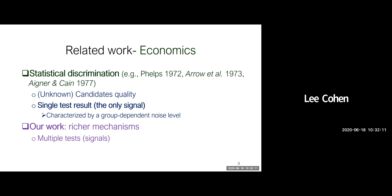Let's review some related work. In general, there is a line of research in economic literature called statistical discrimination. In these works, there are candidates with unknown qualities and only one signal, which can be thought of as a single test result. This signal is characterized by a group-dependent noise level. Our work involves a richer mechanism — we consider multiple tests and optimize over them.